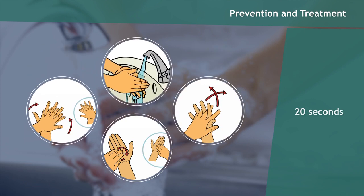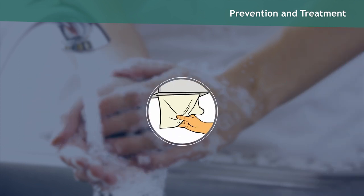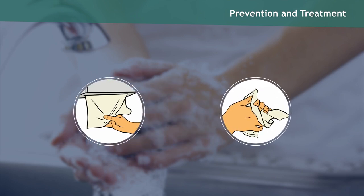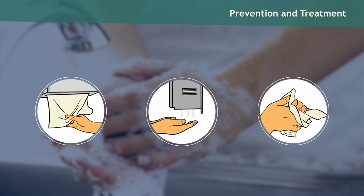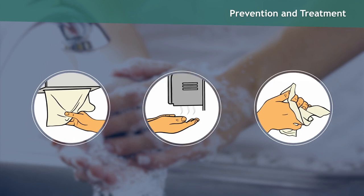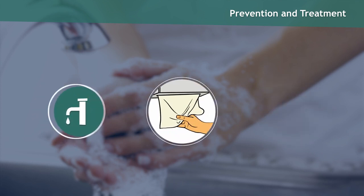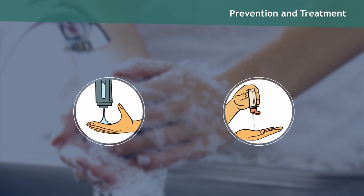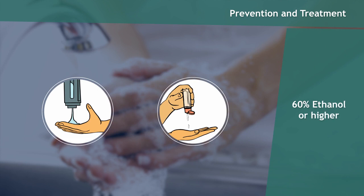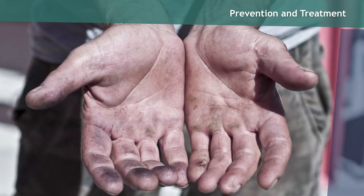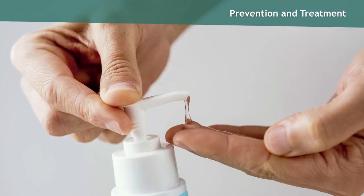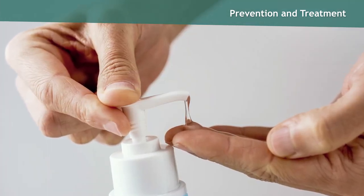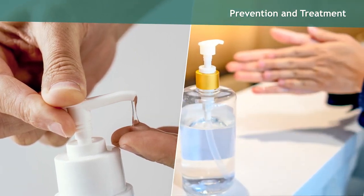Scrub your hands for at least 20 seconds, then turn the tap on and rinse your hands well under clean, warm running water. Because damp hands can promote the spread of the virus, dry them using a clean, disposable towel, if available, and rub vigorously until they are dry. If a disposable towel is not available, air dry your hands using a powered hand dryer. If possible, use disposable towels to turn off the tap and open the bathroom door. If soap and water aren't available, use alcohol-based hand sanitizer of 60% ethanol or higher. If there is visible dirt on your hands, it must be removed first. The CDC recommends that enough sanitizer is applied to cover all surfaces of your hands and then rub them together for at least 20 seconds.